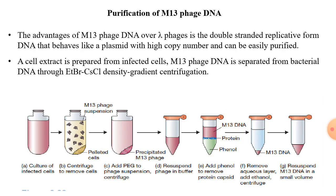Purification of M13 phage: M13 phage is another phage known to infect bacteria and is of great importance in genetic engineering because of its double-stranded replicative form, which resembles a plasmid and is frequently employed in genetic experiments. M13 is a non-lysogenic phage and does not cause lysis of bacterial cells. The extraction is performed similarly to lambda phage: culture of infected cells is subjected to centrifugation to remove the bacterial cells, leaving M13 phage in the suspension.